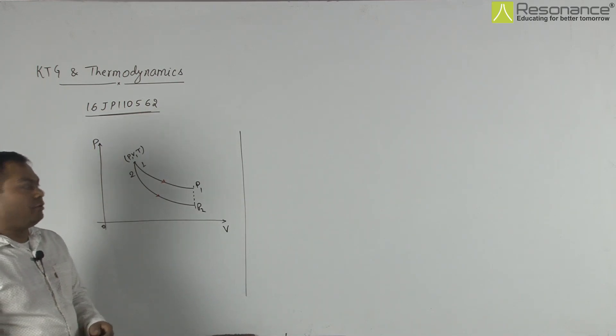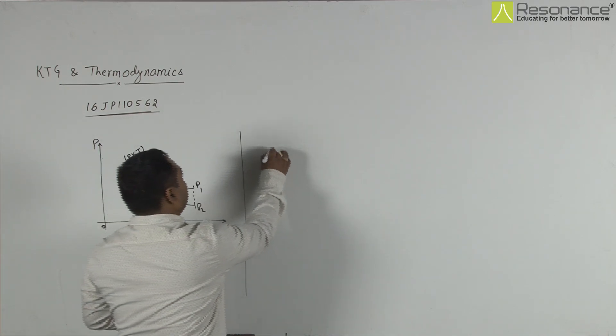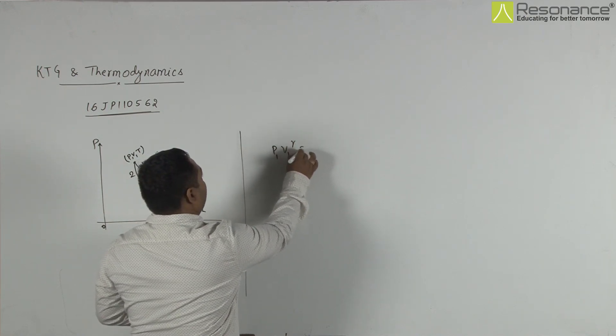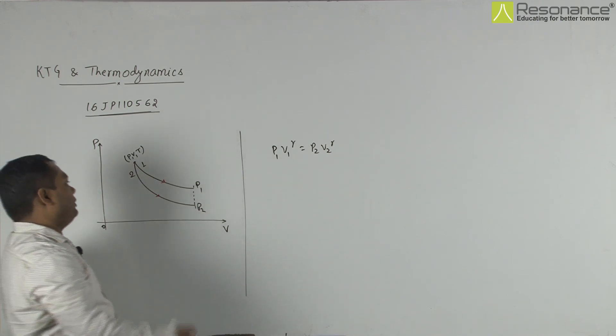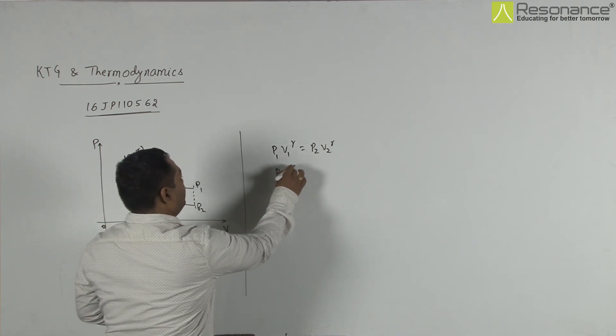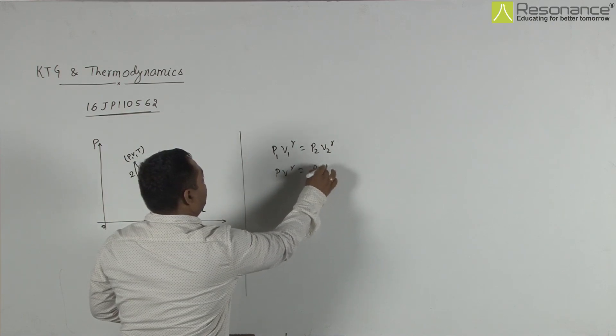Suppose for the adiabatic process, the equation is P1V1^gamma equals P2V2^gamma. Its initial value P1 is P and V1 is V. So this is PV^gamma equals P2V2^gamma.